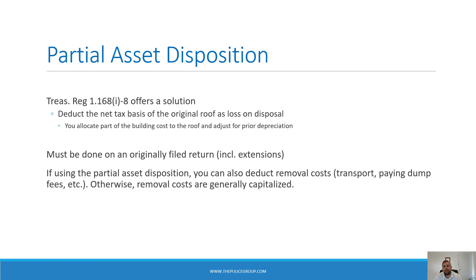The net tax basis is the original tax basis of the asset less depreciation taken to date. You determine the net tax basis of the roof by allocating part of that building cost and depreciation to the roof itself. This must be done on an originally filed return by the due date including extensions — you generally can't amend or use a change in accounting method to go back in time and take the partial asset disposition.